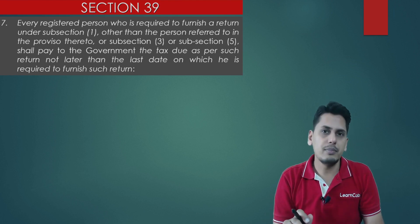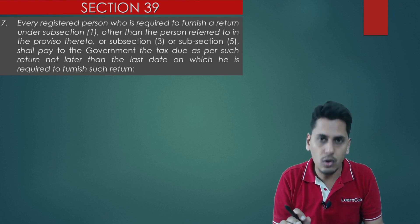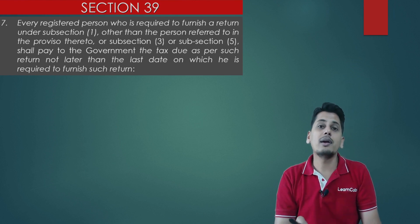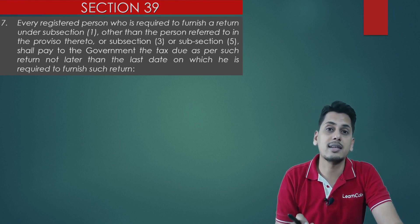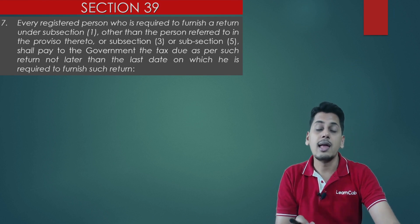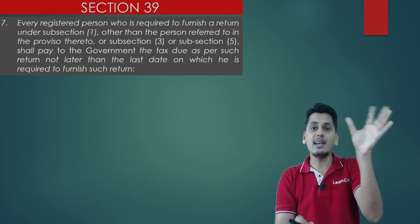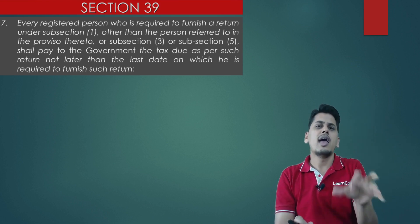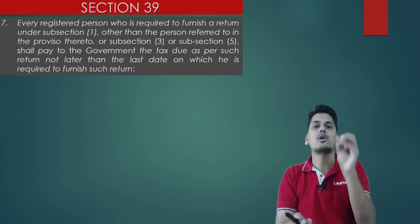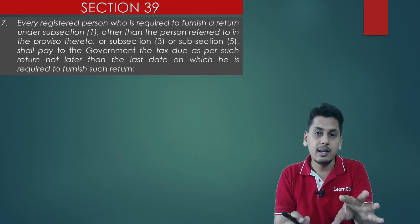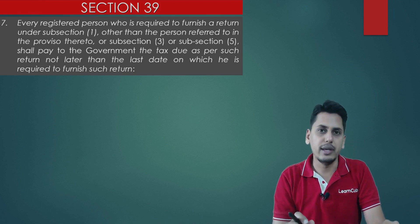Even under the QRMP scheme, on a month-on-month basis, you have to compute the amount of output tax, the amount of input tax credit according to Rule 36(4), and then deposit the differential taxes. Only what is not required is punching these figures into the return form. There is really no relaxation being given.